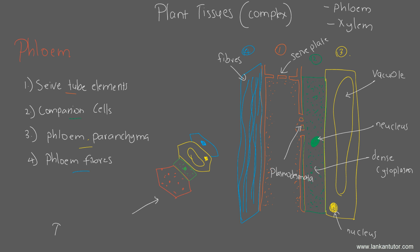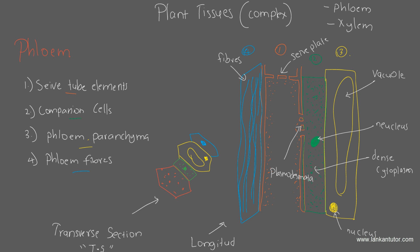Next is phloem parenchyma. It is found in both primary and secondary phloem. In the secondary phloem, they are radially arranged to form medullary rays. The function is the same as the parenchyma tissues we discussed before — storage.